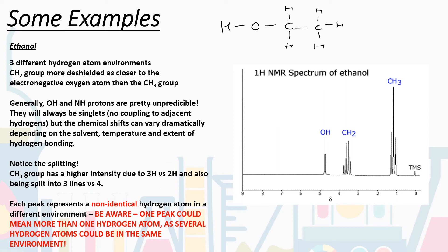The integration ratio corresponds to 3 vs. 2 vs. 1 hydrogens. Generally, OH and NH protons for alcohols and amines are very unpredictable — they depend on solvent, temperature, and the extent of hydrogen bonding. They're always singlets because the oxygen gets in the way and stops coupling from occurring — lone pairs in the oxygen essentially stop the hydrogens from communicating with anything further than the oxygen.